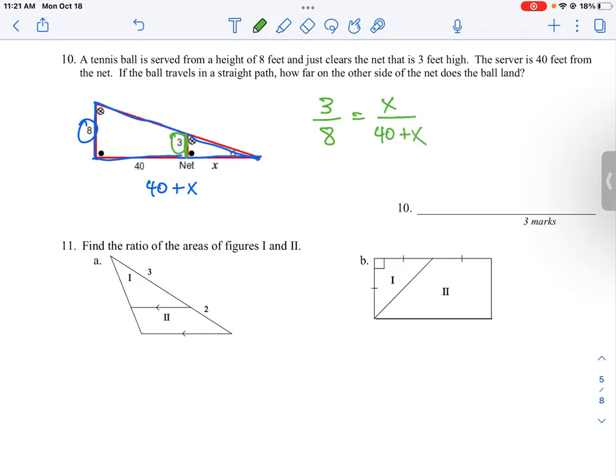Therefore we have two sides here that we can make a comparison, and then all we have to do is solve for x, and that will tell us how far on the other side of the net. So the net is 3 feet here, so how far does it travel on the other side, which is what we're looking for. That's the value of x.